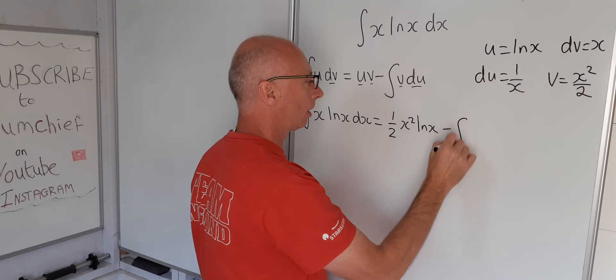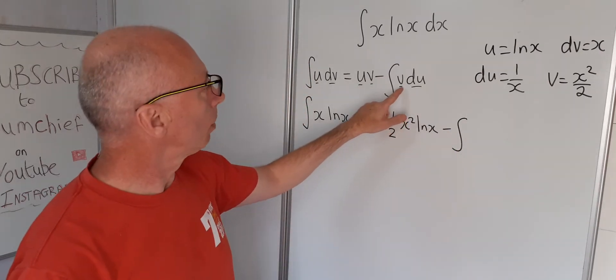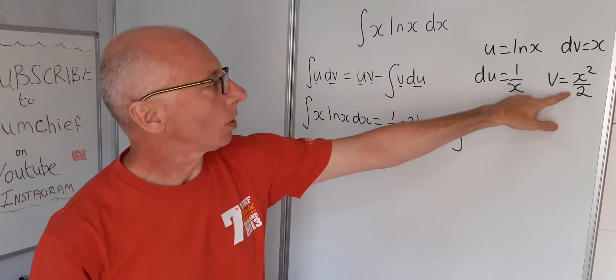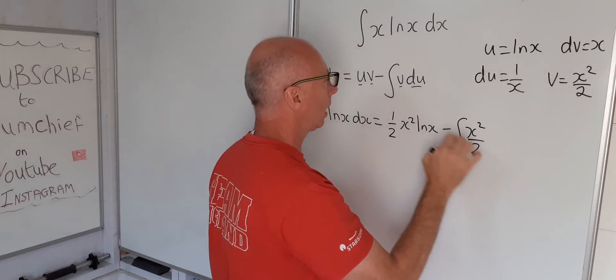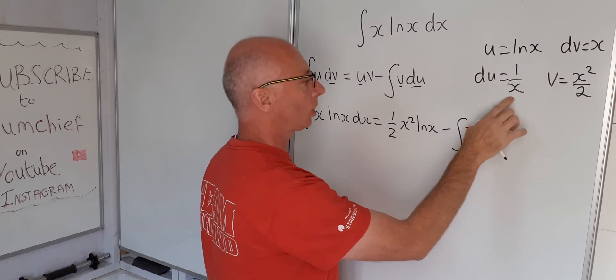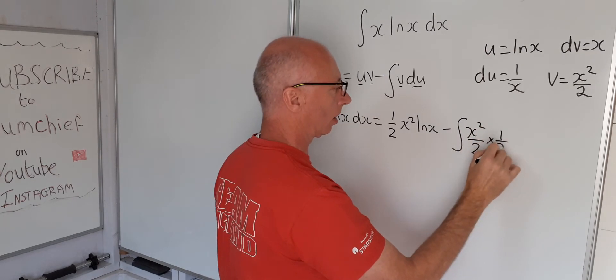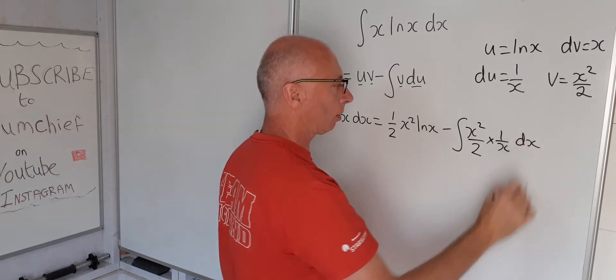and then subtract the next integral which will be v, which is x squared over 2, and du, which is 1 over x, and we'll take this integral with respect to x.